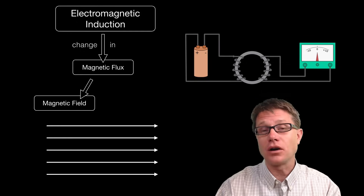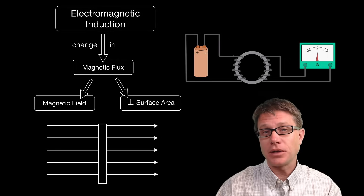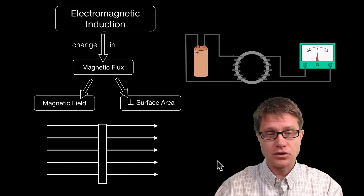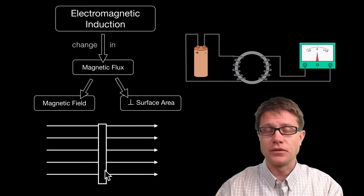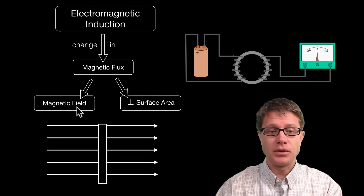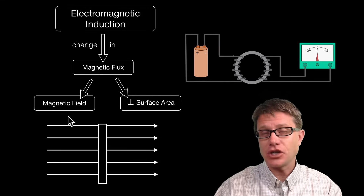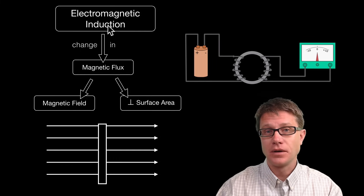How large that magnetic field is, multiplied times the surface area perpendicular to that magnetic field. Imagine that this right here is a wire loop — we have got a little bit of wire and we have got a magnetic field. And so if we ever have a change in that magnetic flux, then we are going to have electromagnetic induction occurring.